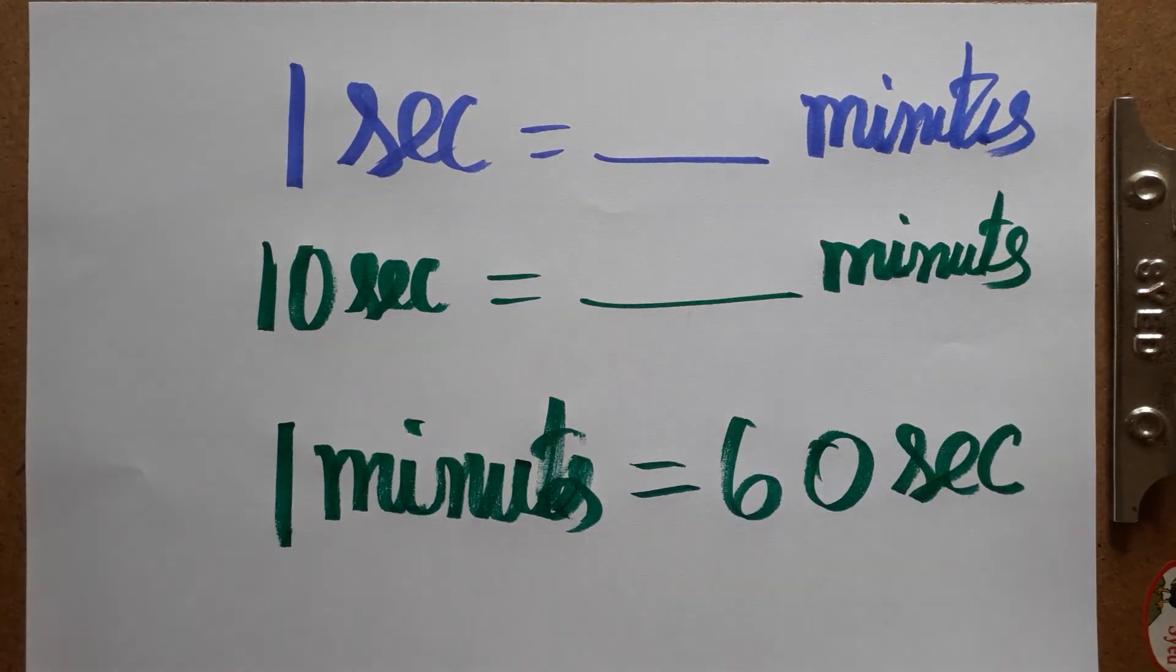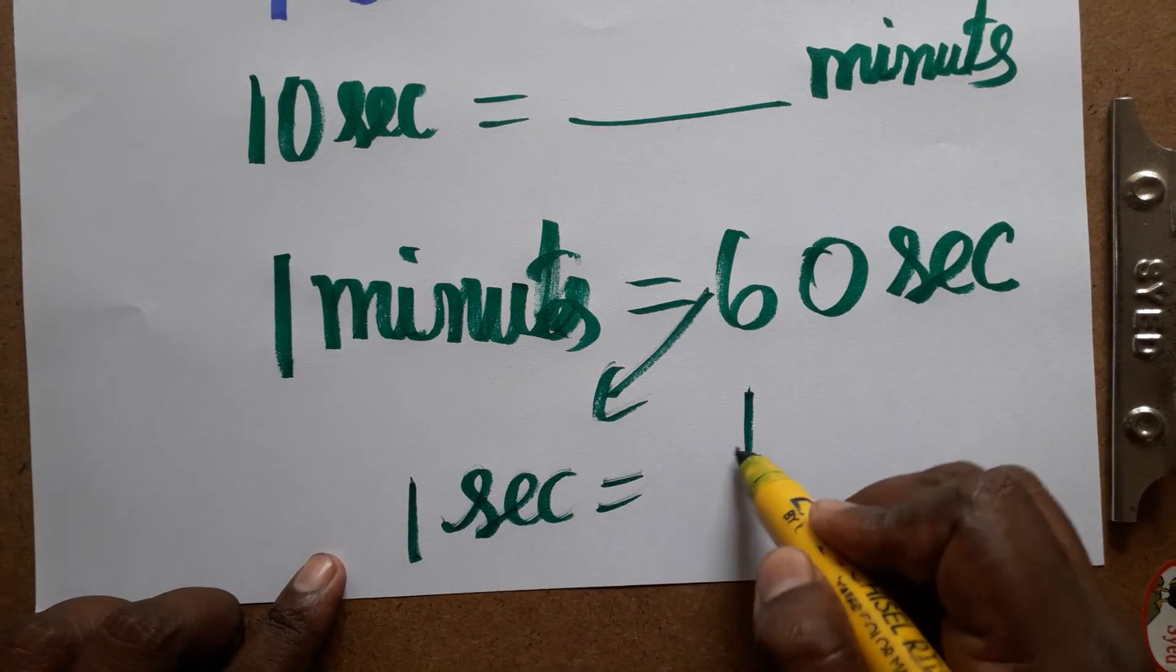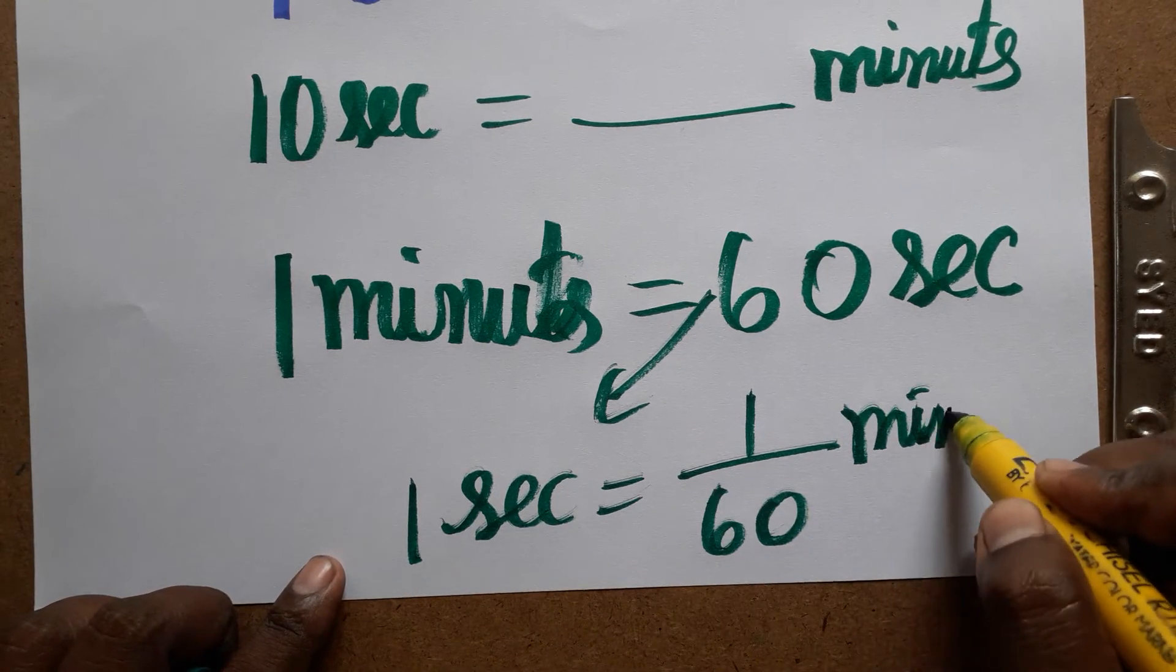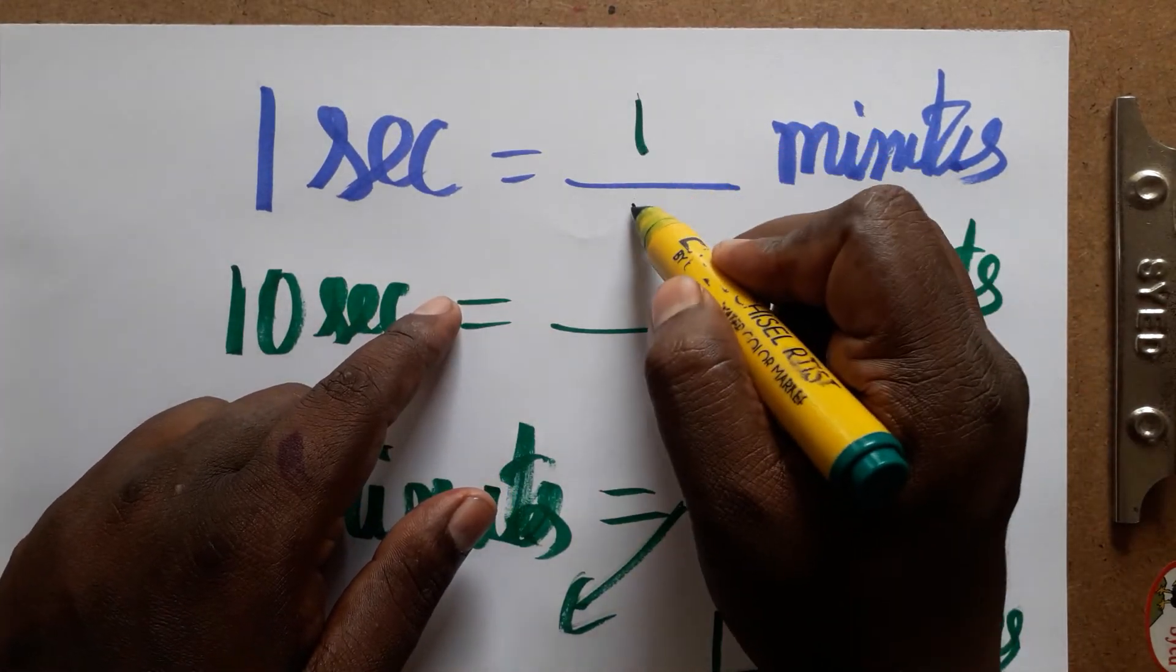One second is equal to dash minutes. So this 60 you can bring here as the denominator. One second is equal to 1 divided by 60 minutes. So 1 second is 1 divided by 60.